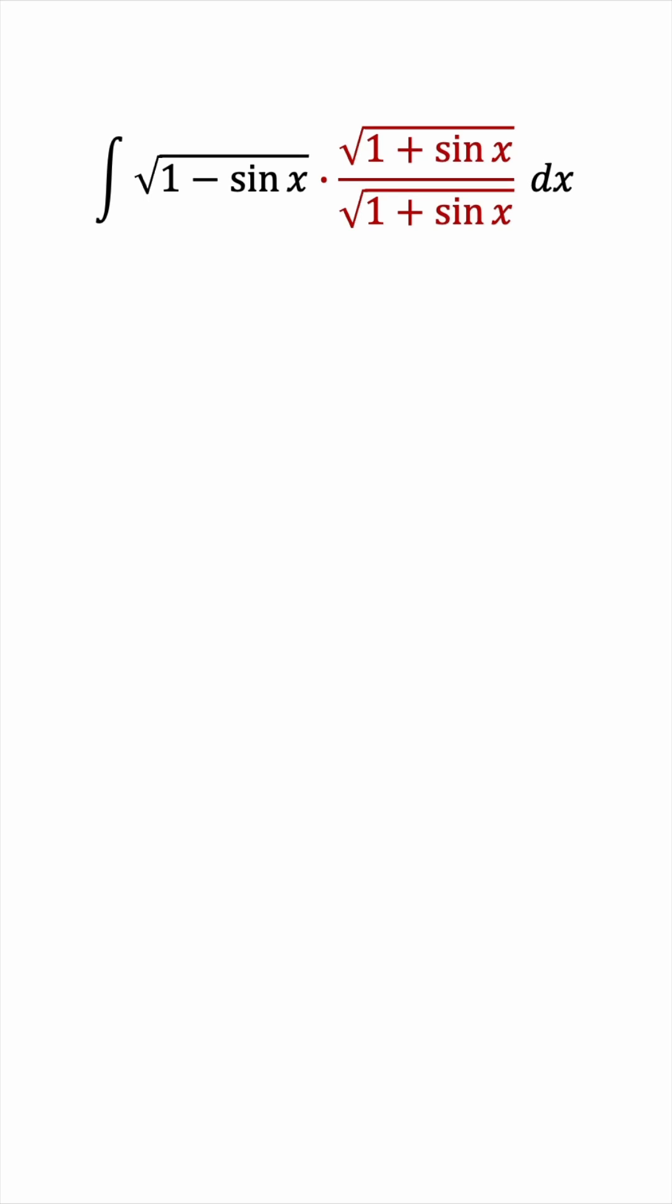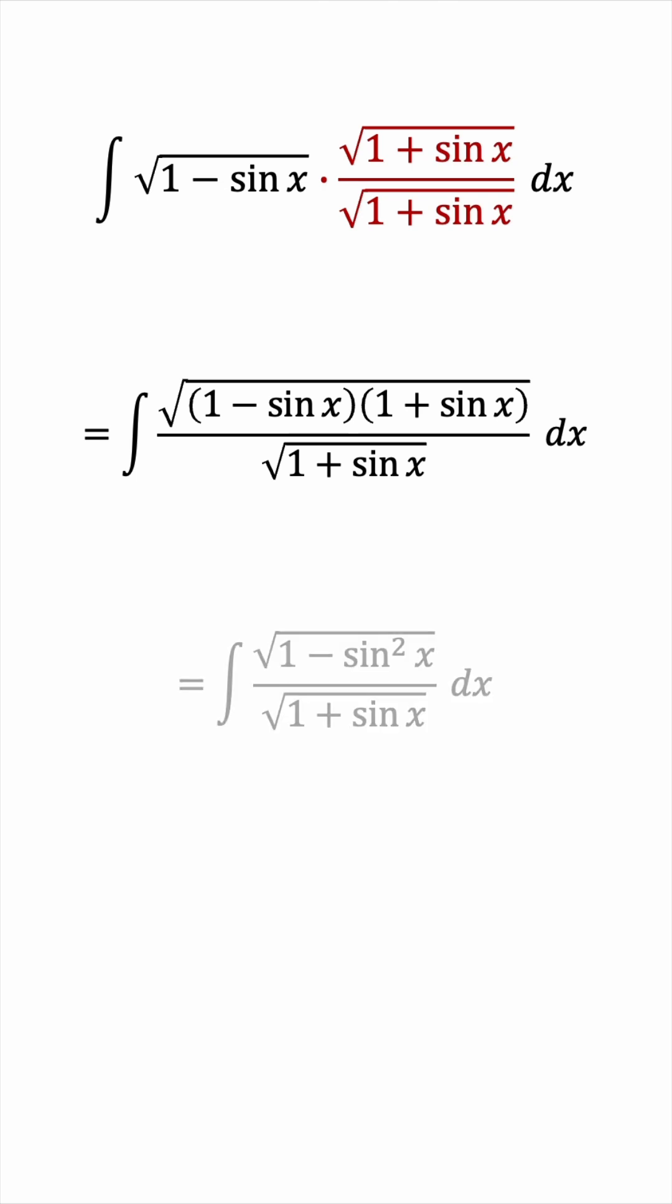This allows us to rewrite the numerator as the product of 1 minus sine x and 1 plus sine x under the square root. And this simplifies to 1 minus sine squared x. So we forced this nice situation to appear.